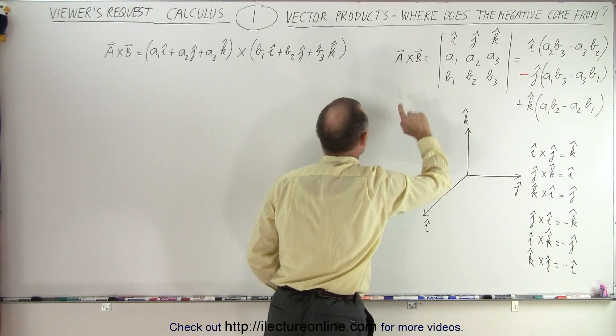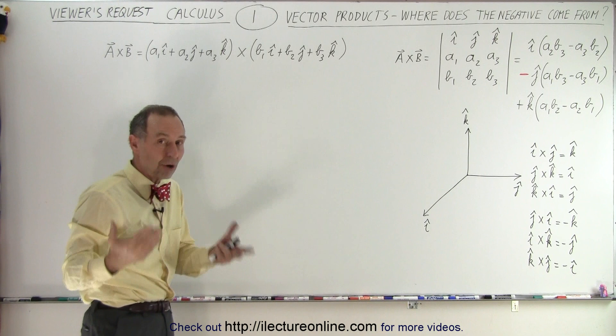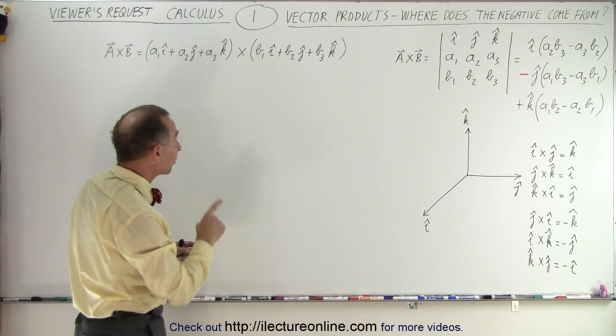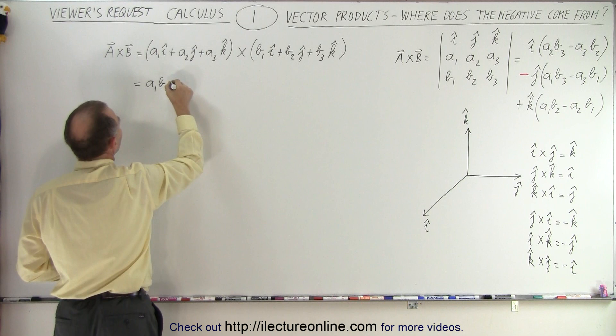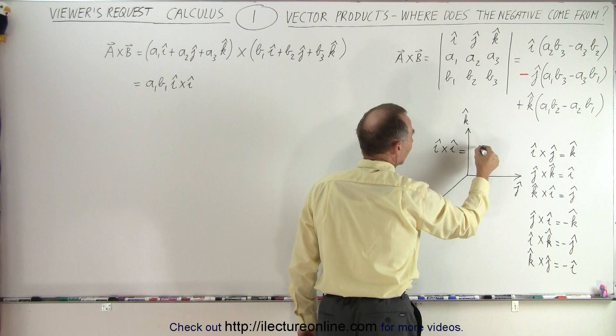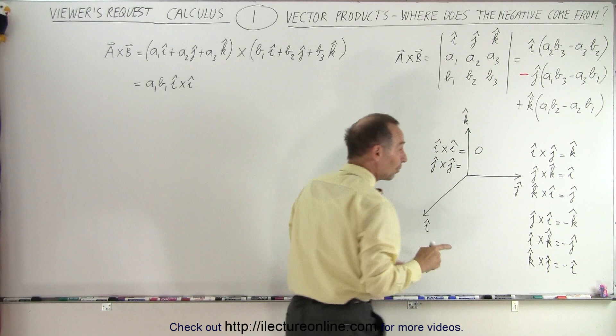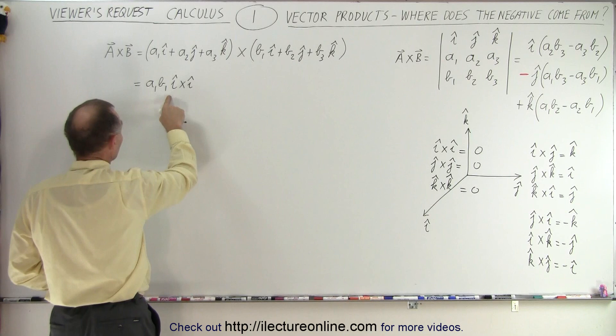Now when we take the cross product of two vectors written in component form and multiply the elements together, we get nine products in total. Taking the cross products of unit vectors into account, notice that I×I, J×J, and K×K all equal zero — because cross-multiplying parallel vectors gives zero.